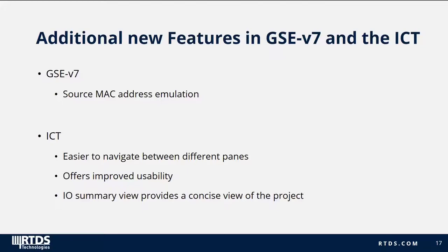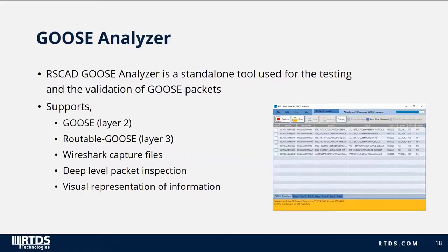These are some additional new features in GSE V7 and the ICT. In the GSE V7 component, you can set specific source MAC addresses for GOOSE packets, which helps to emulate GOOSE streams of specific devices in the network. In the ICT, it is easier to navigate between different panes and offers improved usability. The ICT provides a concise view of the project in the IO Summary view.